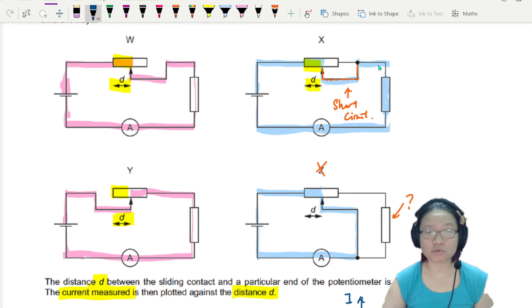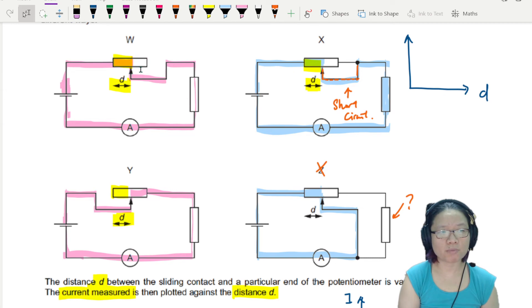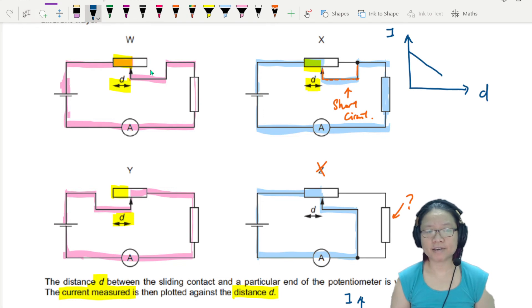In fact, if you want to sketch out the graph for W and X, as D increases, you get more and more resistance. So the current should drop. This one is for W and X.